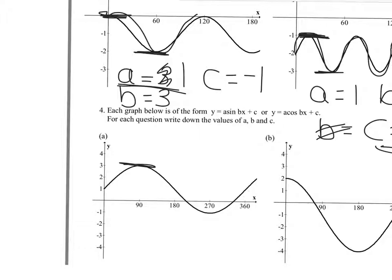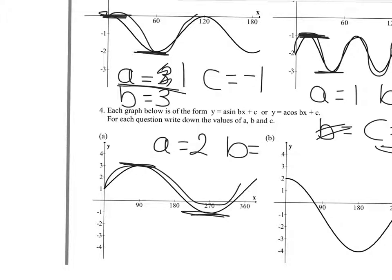Next one: the curve goes up to 3, down to minus 1. That's a total height of 4. Half that to get 2 — amplitude is 2. There's 1 complete curve in 360 degrees, so B is equal to 1.